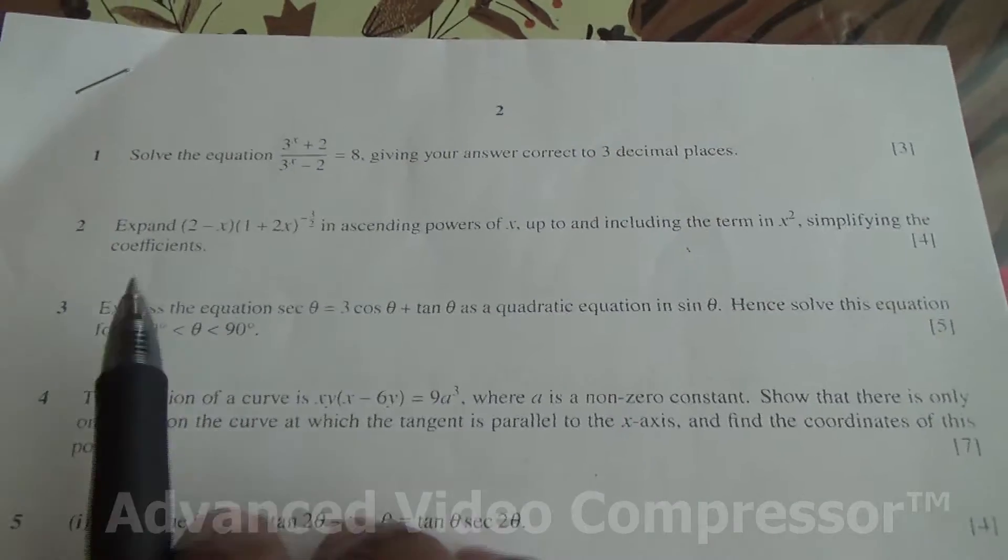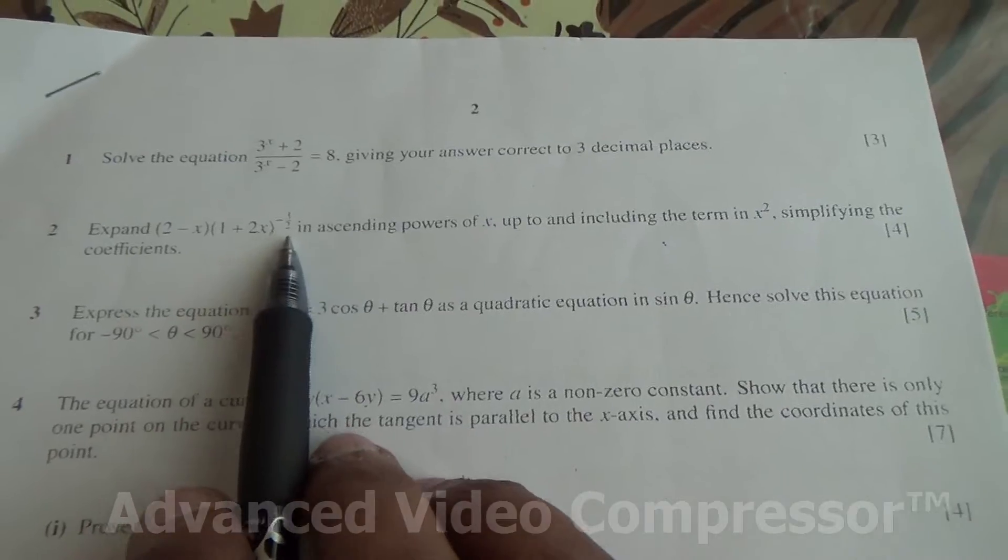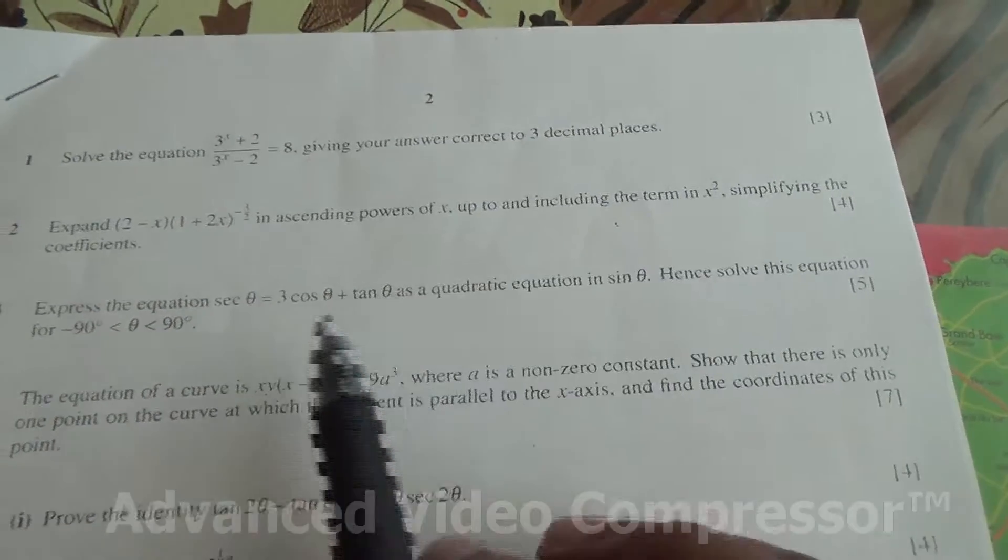Alright, question number 2. Expand (2-x)(1+2x)^(3/2) in ascending powers of x, up to and including the term x squared, simplifying the coefficients.